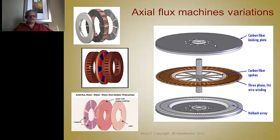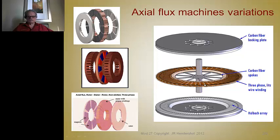Here is a rotor-stator-rotor axial flux configuration using a Halbach array type rotor with no iron — no back iron is required. The only iron in this motor is the shaft and bearings. A carbon fiber backing plate supports the magnets that provide the Halbach array, with carbon fiber spokes, and a three-phase Litz wire winding configuration in the stator.